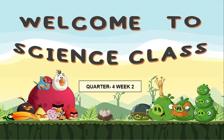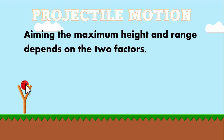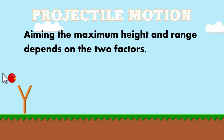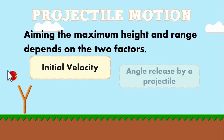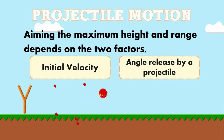Good day, grade 9 students, and welcome to your science class. Last time, we learned about projectile motion. The maximum height and range depend on two factors: the initial velocity and the angle released by a projectile. This gives us a horizontally launched projectile and an angle-launched projectile.